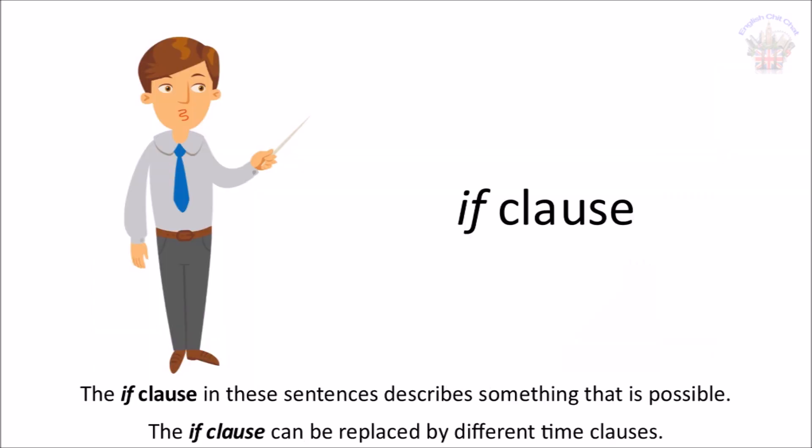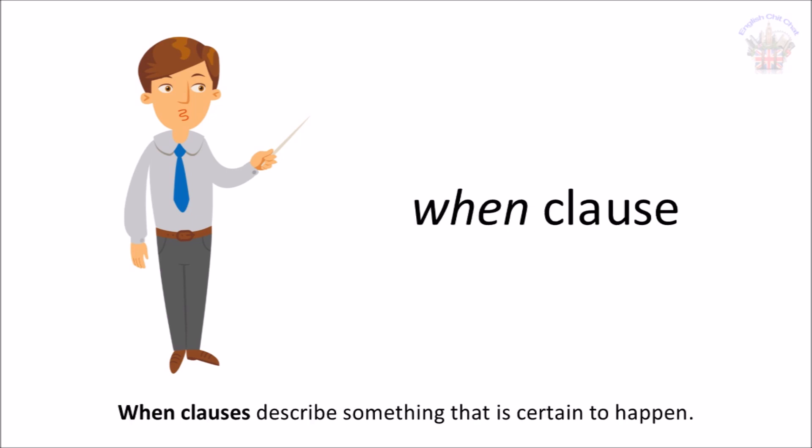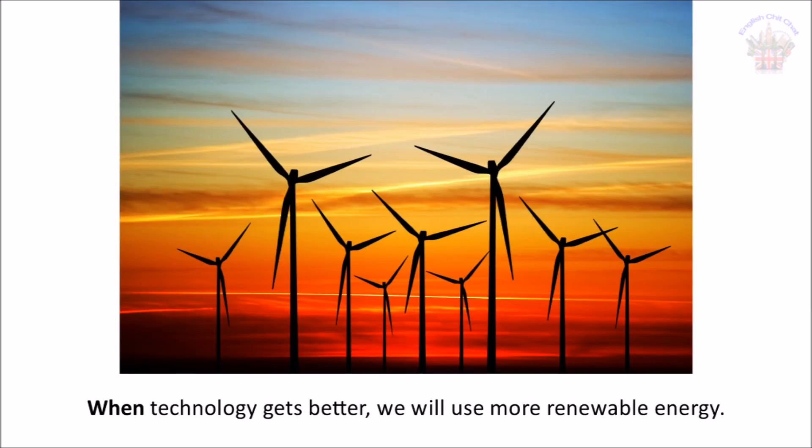The if clause in these sentences describes something that is possible. The if clause can be replaced by different time clauses. 'When' clauses describe something that is certain to happen. For example: 'When technology gets better, we will use more renewable energy.'